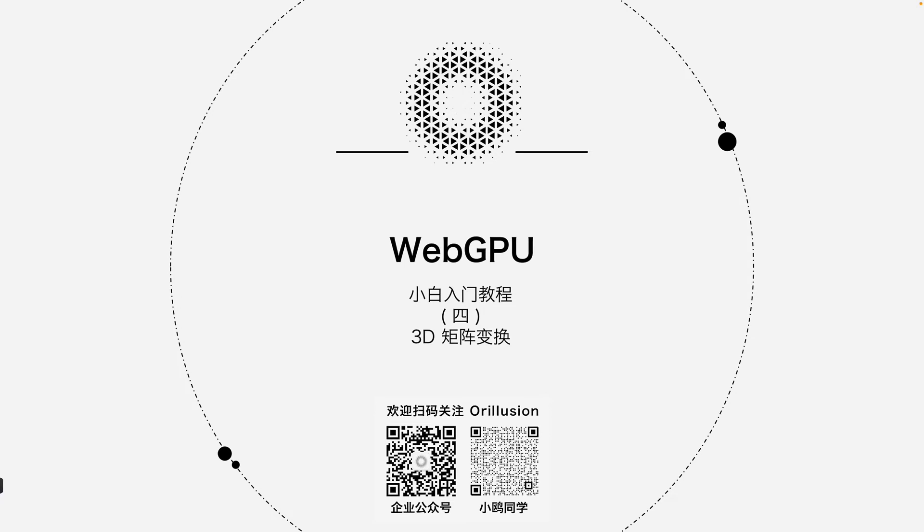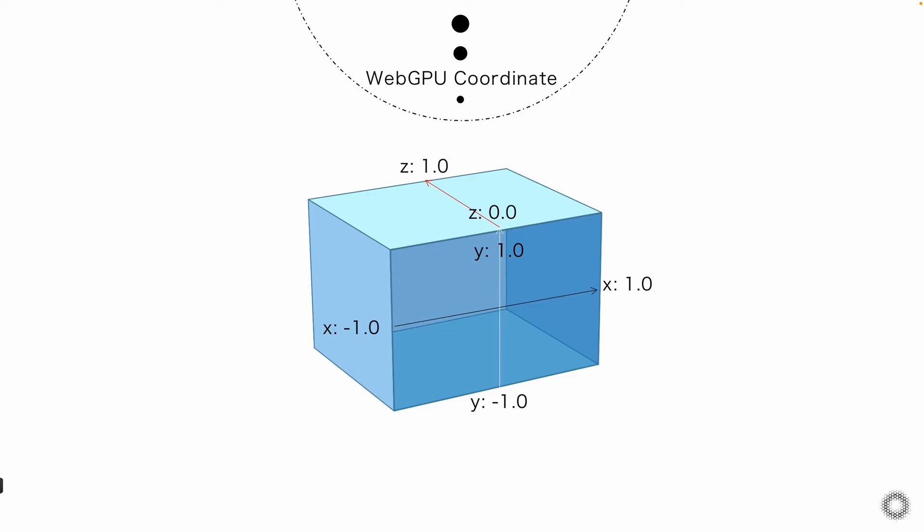Last week, we learned Vertex Buffer and Bind Group to update pipelines dynamically. Today, we will learn basic 3D transformation principles and how to use vertex information with Bind Group to draw basic 3D graphics dynamically. This tutorial will be divided into two videos. Today, we'll first learn the basic principles of 3D transformation and in the next video, we'll implement it in the demo.